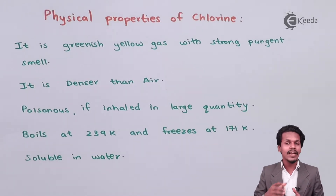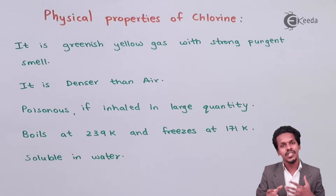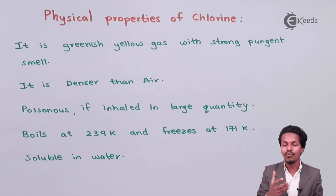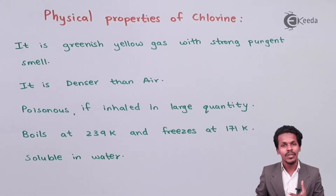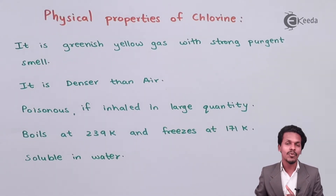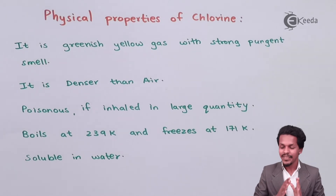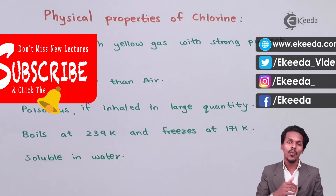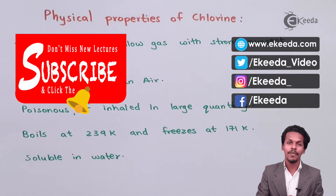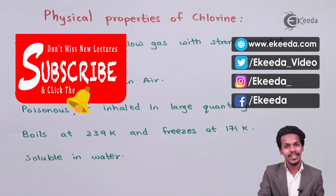When Cl2 is dissolved in water and that water freezes, we get Cl2·8H2O, a chlorine hydrate. Those were the physical properties of Cl2. Thank you for watching — don't forget to subscribe to the Ekeeda channel.